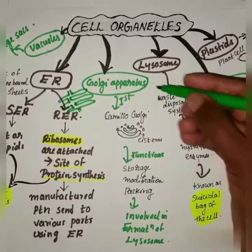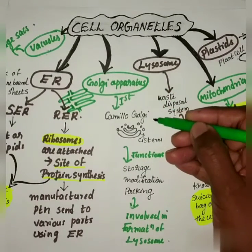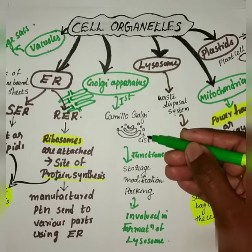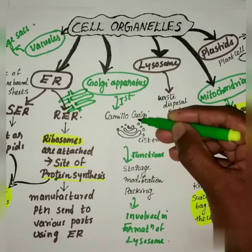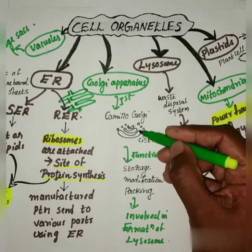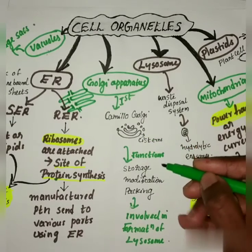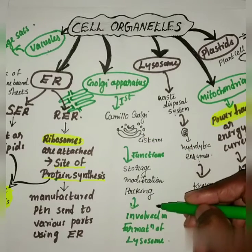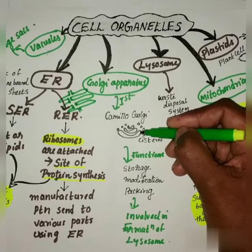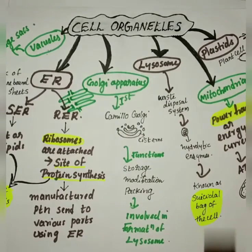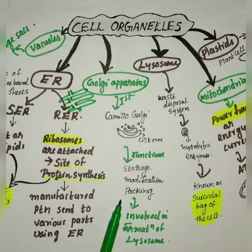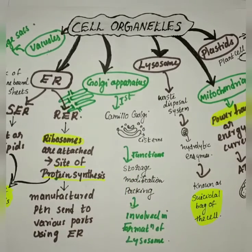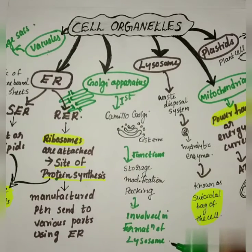The next cell organelle is the Golgi apparatus, first discovered by Camillo Golgi. Its membrane-bound vesicles are arranged approximately parallel to each other, and at the ends you can see the vesicles. The stack of this Golgi complex is called cisternae. The main functions are storage, modification, and packing. The Golgi complex is always near the endoplasmic reticulum because the proteins and lipids produced by ER are transported, stored, modified, and packed by the Golgi complex. It is also involved in the formation of lysosomes.